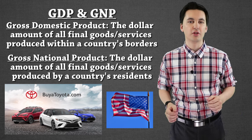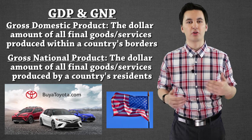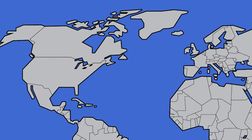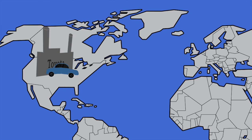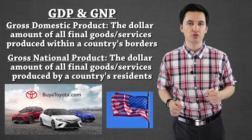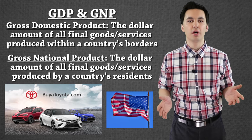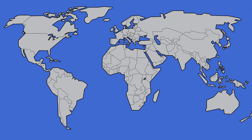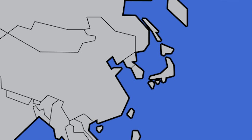So an example of this would be, let's say a car company — let's go with Toyota. Toyota decides to build a plant in the United States. If Toyota built a plant in the US and they're producing cars in the US, that would be factored into the US's GDP. However, it would not be part of our GNP, because Toyota is not an American company. Toyota's production would be factored into Japan's GNP, because they are a Japanese company.